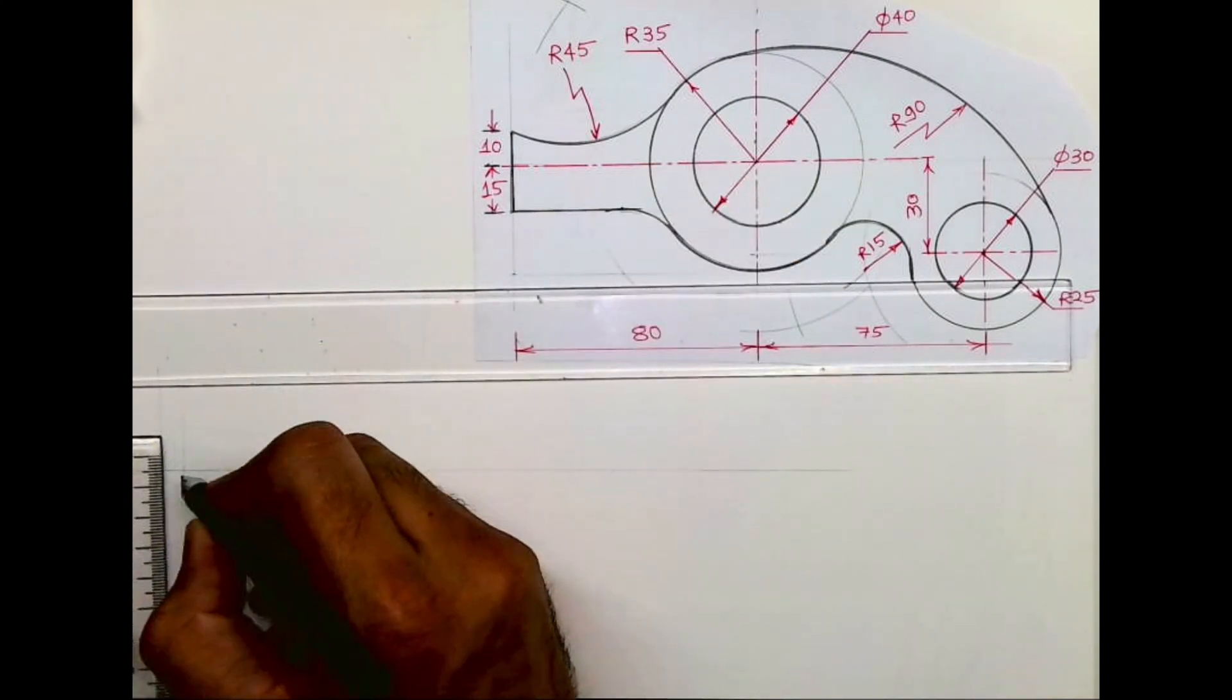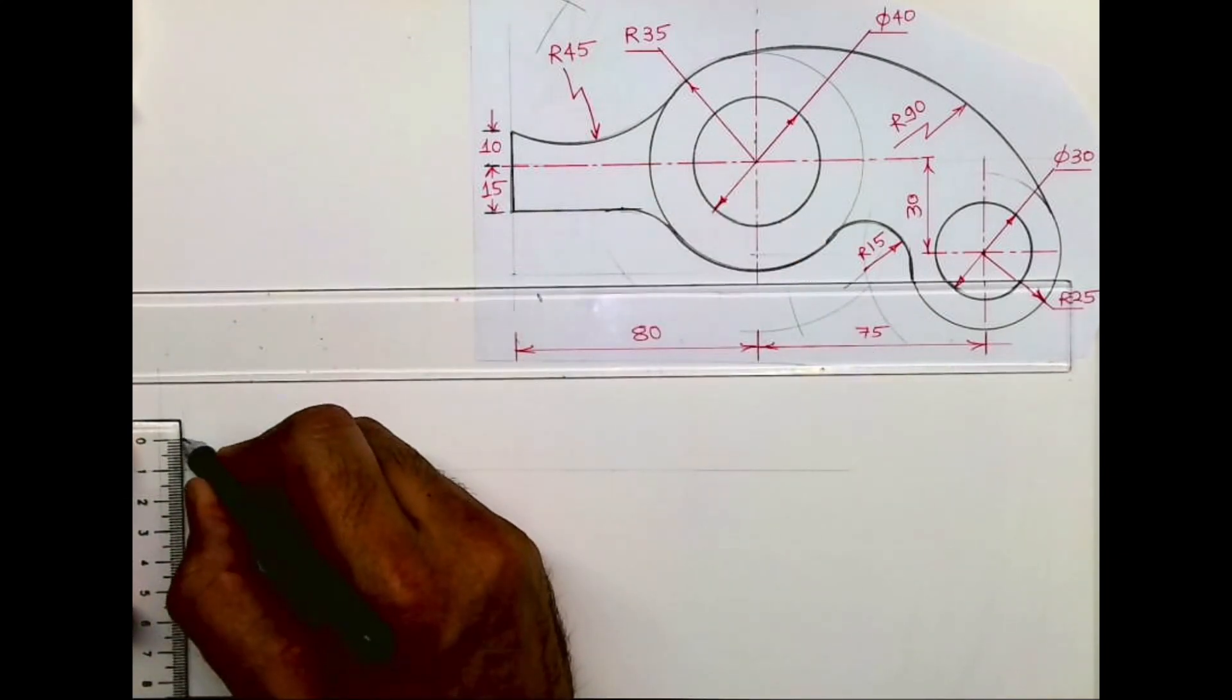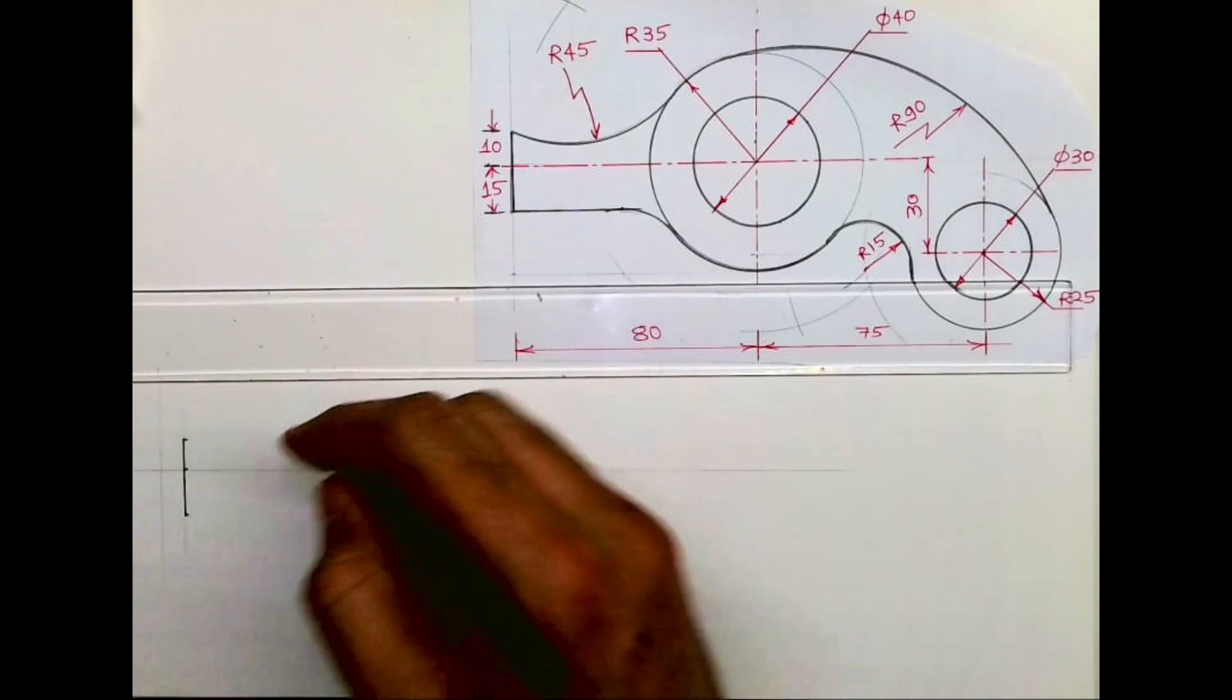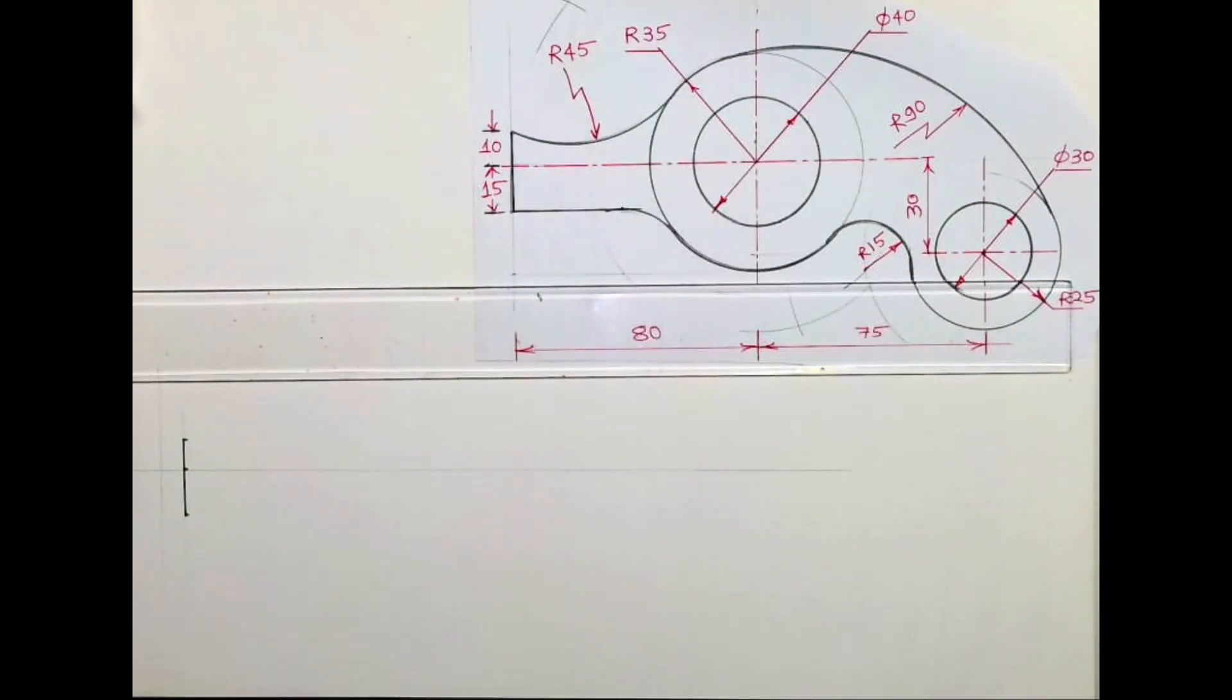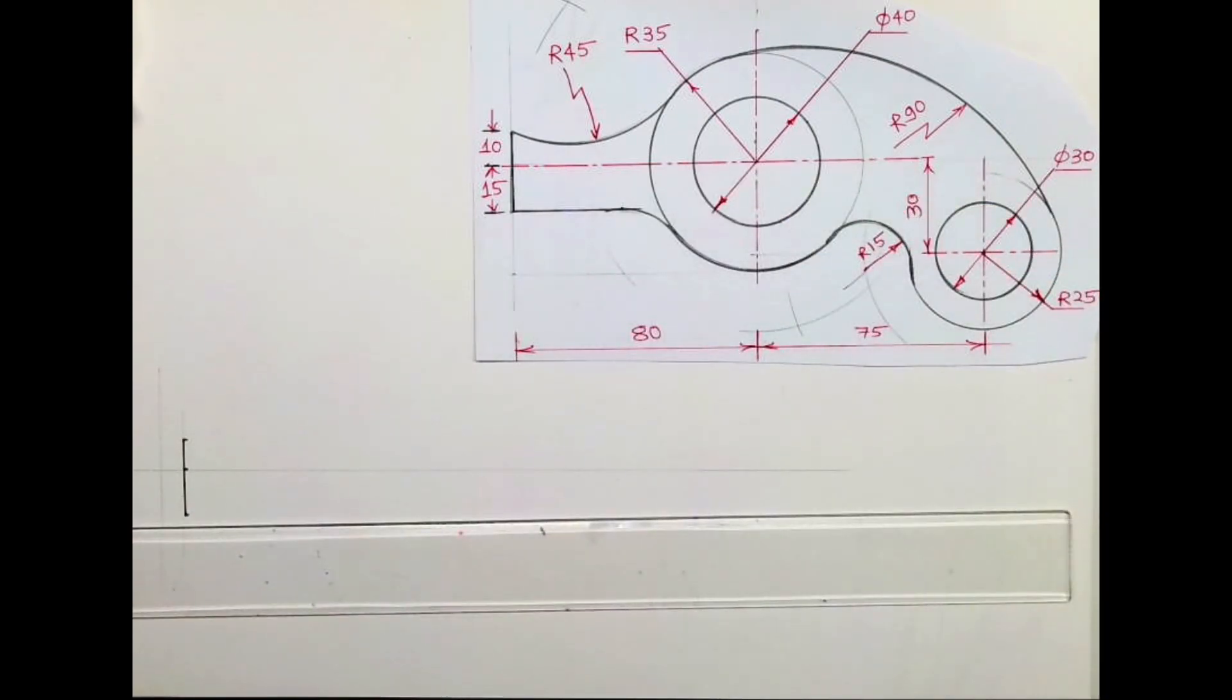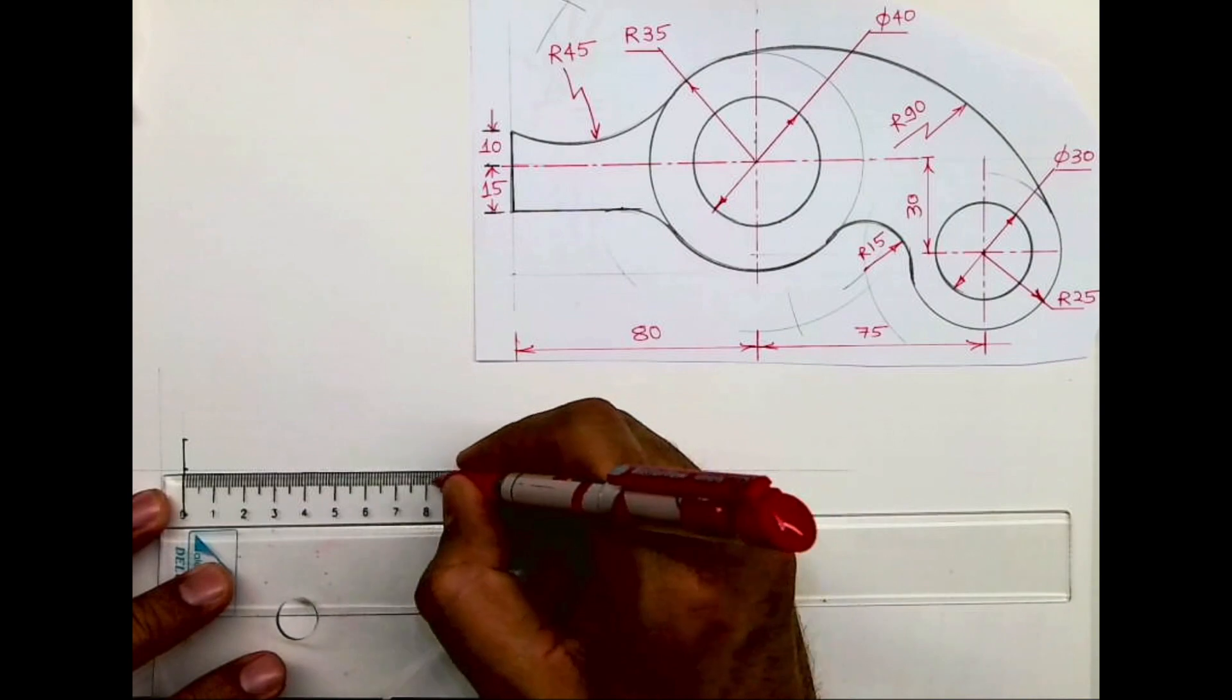First we will mark vertical lines at 10 and 15. Then, looking at the axis line, the length is 80 plus 75, so I will mark 80 and 75.